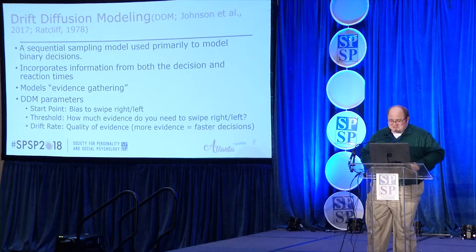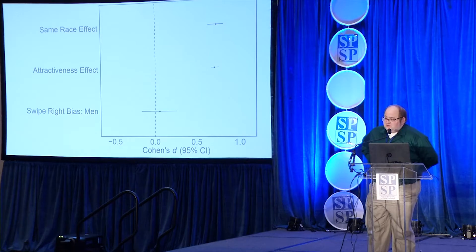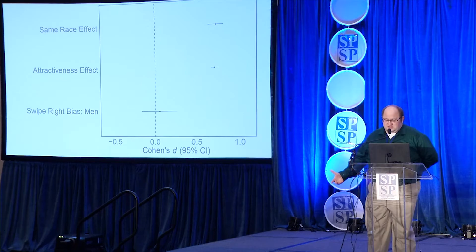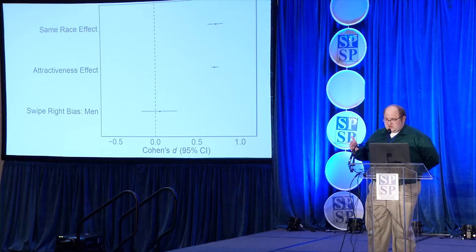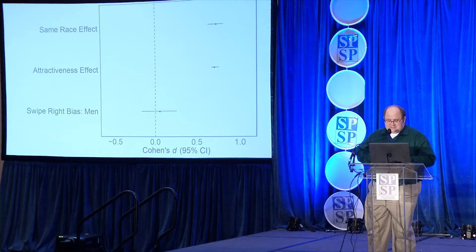These are some of the exploratory analyses: the same-race effect and attractiveness effects are being used and weighted extremely heavily in Tinder swiping decisions. The really cool thing about this model is that after you control for attractiveness features, the gender bias I showed earlier—men swiping right more often—goes away. This connects to a methodological finding in relationships research: men find women very attractive, and that's one reason they're swiping right so often. After you control for that, the gender difference disappears.